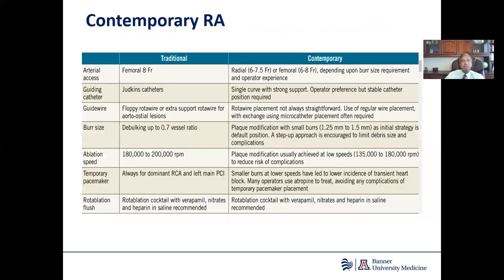This slide compares and contrasts traditional with contemporary atherectomy. We used to use femoral access and an 8 French guide routinely for all atherectomy. That's now changed — most commonly radial access is preferred. You could use a 2-millimeter burr with a 7 French sheath in the right radiology and perform atherectomy in the majority of cases. Guiding catheters no longer need to be large; single-curve catheters with good support like an EBU or an AL can be easily used. The goal is stable catheter position rather than deep intubation.